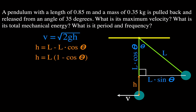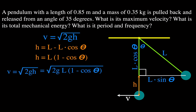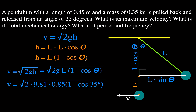We factor out L, so the height equals L times (1 minus cosine of the angle of displacement). Substituting back into the velocity equation, the velocity equals the square root of 2 times 9.81 m/s² times 0.85 times (1 minus cosine of 35 degrees). Taking the square root, you get a velocity of 1.74 meters per second — the velocity of the pendulum as it swings through the equilibrium position when released from 35 degrees.